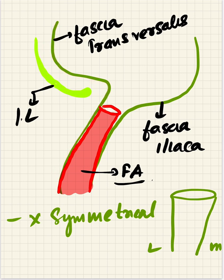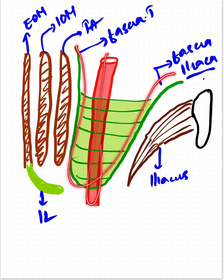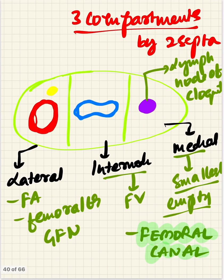The inguinal ligament, which is the lower thickening of the external oblique muscle, and the fascia iliaca together form the femoral sheath. It is not symmetrical. The fascia iliaca covers the iliacus muscle, and the fascia transversalis covers the transverse abdominis muscle. The femoral sheath encloses the femoral artery, femoral vein, and the femoral branch of the genitofemoral nerve.